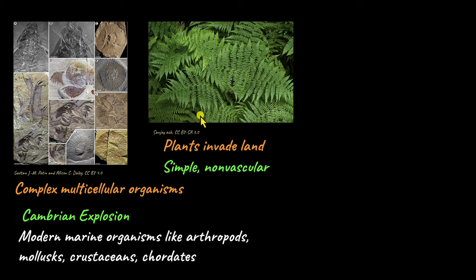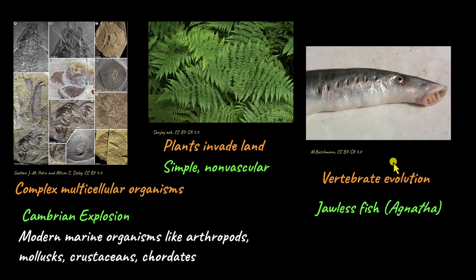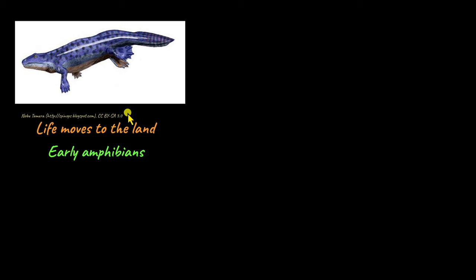Plants were the first organisms to invade land. From the ocean they moved onto land, and the early plants that invaded were simple non-vascular plants like ferns and bryophytes. They spread their roots on land, which eventually helped animals move to land as well. Before that, there was the evolution of vertebrates in the oceans — arthropods, molluscs, and crustaceans were all invertebrates, but jawless fishes were the first vertebrates to evolve in the ocean. With vertebrate evolution, animals finally moved to land, and early amphibians evolved, capable of living in both water and land.